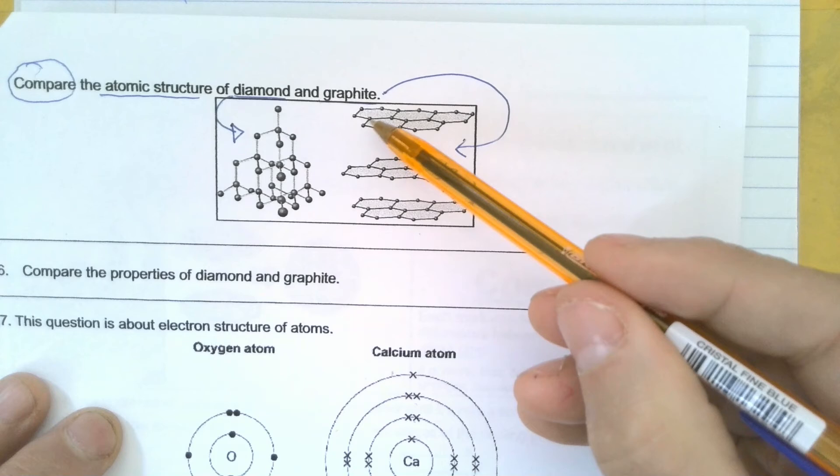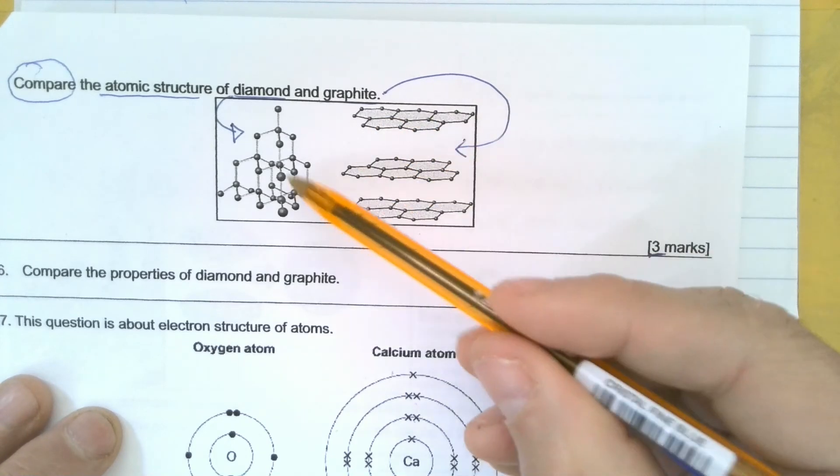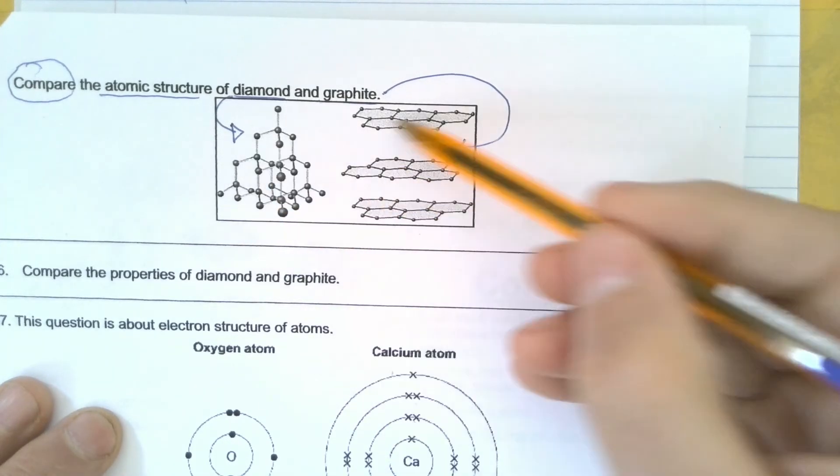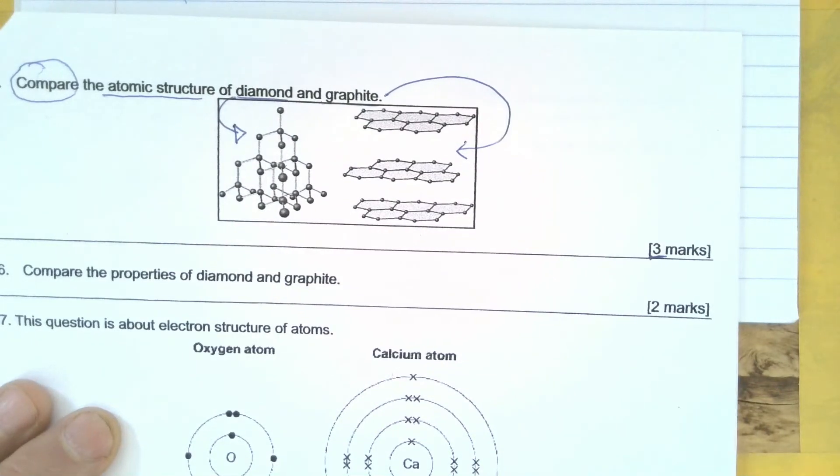Whereas in graphite, it looks like they're only connected to three at maximum. So it looks like we've more connections here. We could say here, this is connected in three dimensions, whereas this one's only in two, although that looks very similar to the layers and no layers.